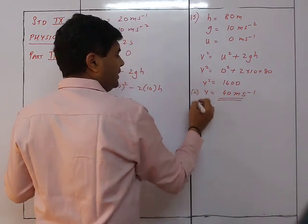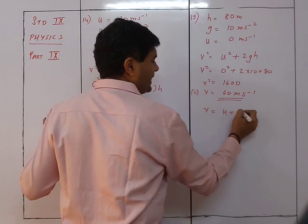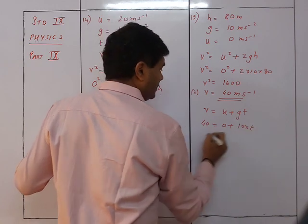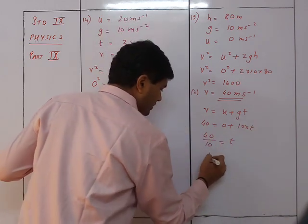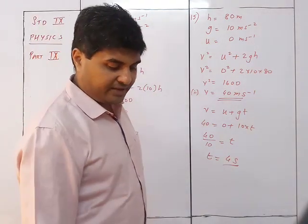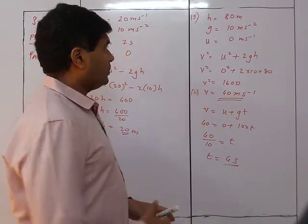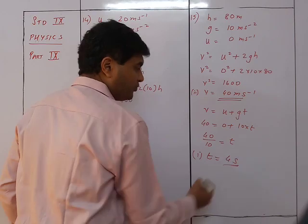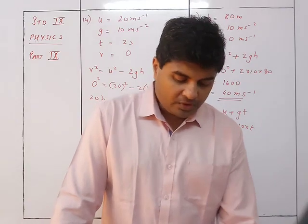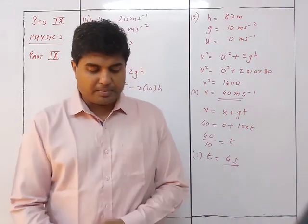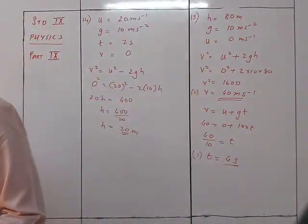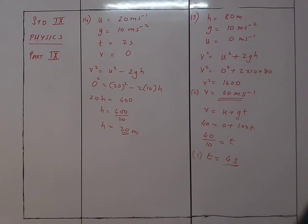For time: v = u + gt → 40 = 0 + 10t → t = 4 seconds. So the time taken is 4 seconds and the velocity on reaching the ground is 40 m/s. This was Question 15. We are left with 5 more questions which will be covered in the next video.